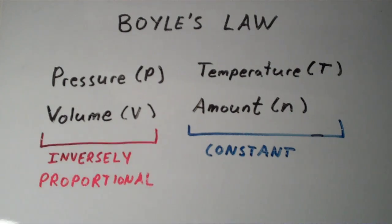And the answer is that they are inversely proportional to one another. So that means that at constant temperature and amount, as one increases, the other decreases. So if I were to increase the pressure of a gas, then the volume would decrease. If I were to increase the volume of the gas, then the pressure would decrease.